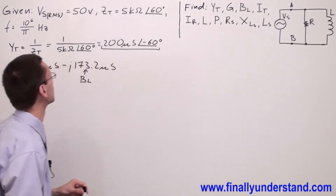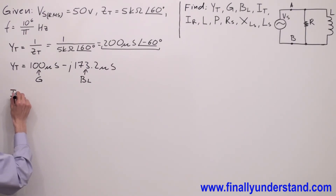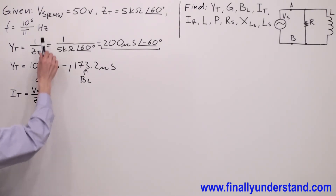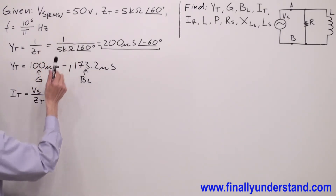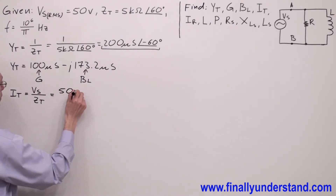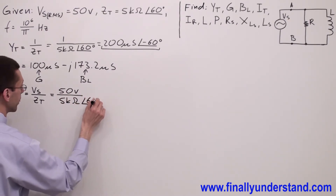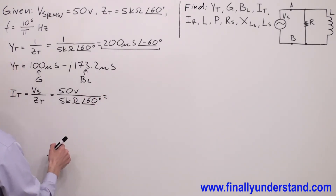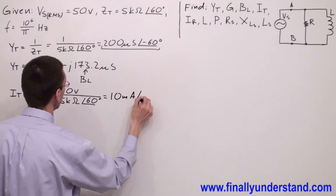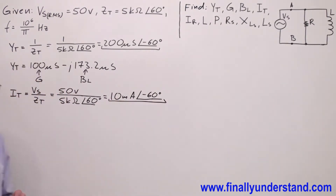Next, I'm supposed to find I-total. In order to find I-total, I'm going to use Ohm's law. I-total equals voltage source over Z-total. Please notice that the voltage source given is the RMS value of 50 volts, and Z-total is given. So it's very easy to find I-total. Voltage source equals 50 volts and Z-total equals 5 kΩ at an angle of 60 degrees. So we have I-total equal to 10 mA at an angle of negative 60 degrees. This is my total current in the circuit.